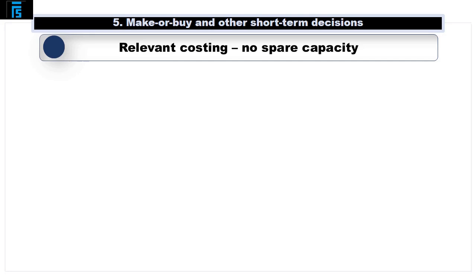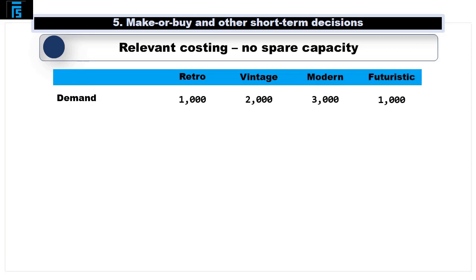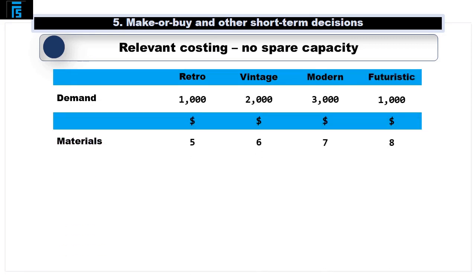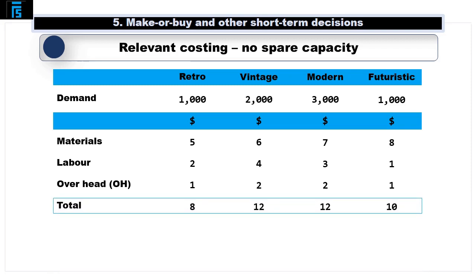Funky Shirts Ltd make four products: the retro, the vintage, the modern and the futuristic shirt. The material cost per unit is $5 for a retro, $6 for a vintage, $7 for a modern and $8 for a futuristic. Labour costs are $2, $4, $3 and $1 respectively, and variable overheads are $1, $2, $2 and $1. We can calculate the total variable costs to be $8 for a retro, $12 for a vintage, $12 for a modern and $10 for a futuristic. We also have the option to buy in each of these products at a cost of $9 for a retro, $11 for a vintage, $14 for a modern and $12 for a futuristic.